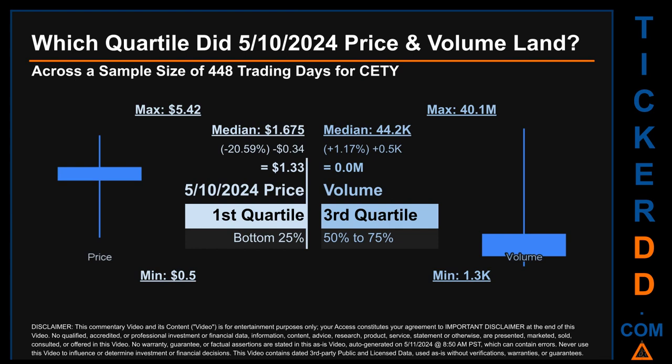The day's volume landed within the third quartile, that is within the 50 to 75% range of all sampled daily volume, which saw a max daily volume of 40.1 million and a minimum of 1,300. Quartiles tell us about the spread of a data set by breaking it into quarters, just like how the median breaks the set in half. Descriptively, CETY has a median price of $1.675, so the 10th of May 2024 price was lower from that middle marker by 20.59%. The day's volume was more than the median by 1.17%.